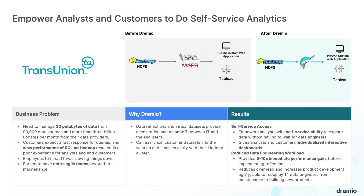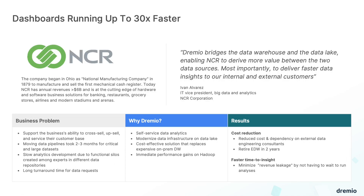Before we get to the demo, let's take a look at two customers who have moved to Dremio from Hadoop. TransUnion is one of our early customers who saw value in Dremio right away when they started testing it against Apache Drill. Customers were experiencing slow performance with SQL on Hadoop with Apache Drill on a lot of data. They saw immediate performance gains using our reflections and the self-service ability to explore data, empowering analysts and customers with interactive dashboards. NCR saw 30 times performance improvement when they moved to Dremio from Hadoop. We have many more customers who have seen similar performance improvements, and business users love the self-service capability compared to a complex Hadoop ecosystem.